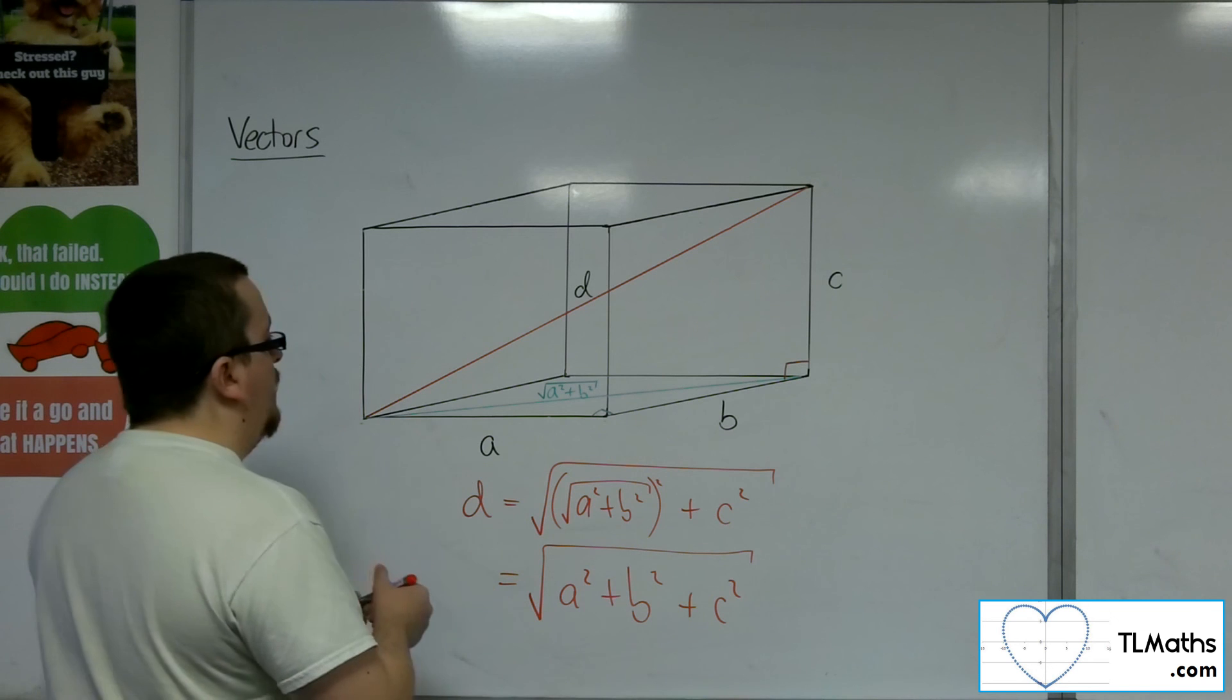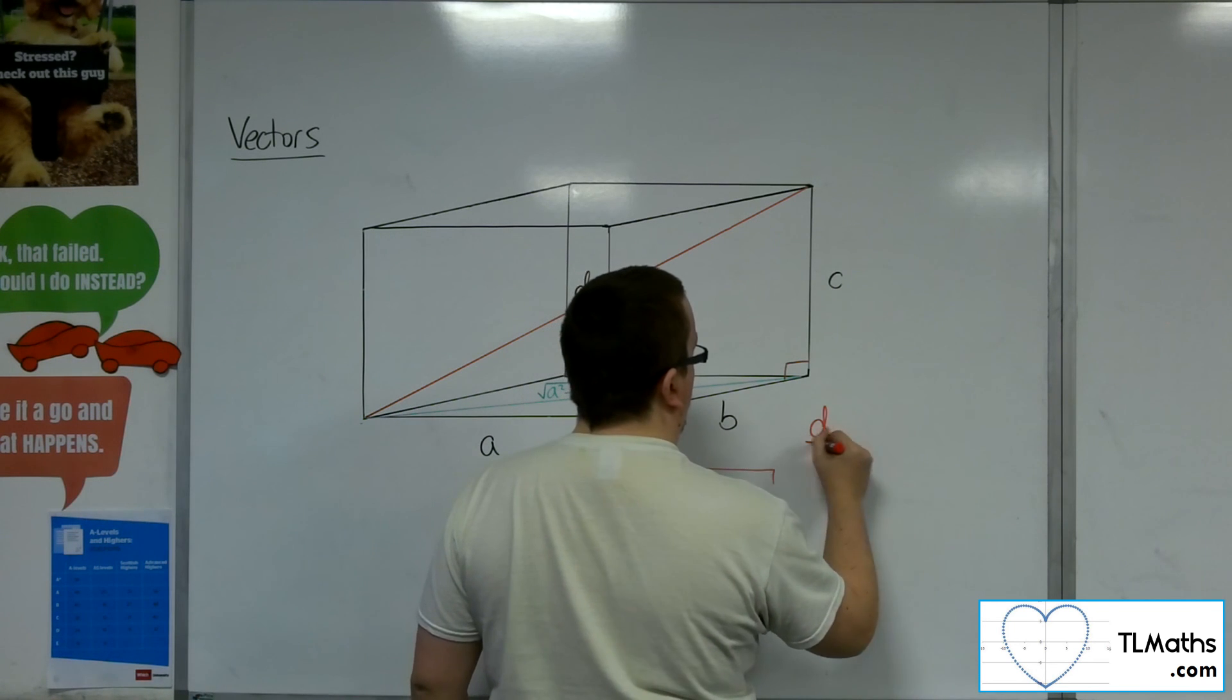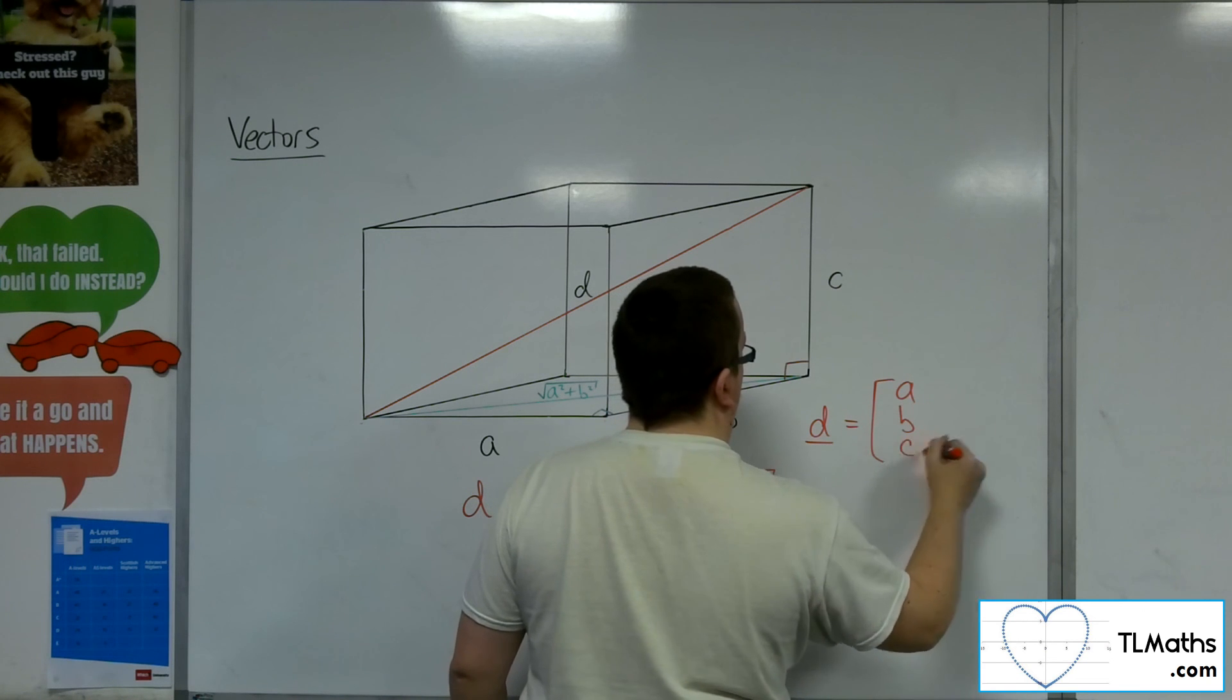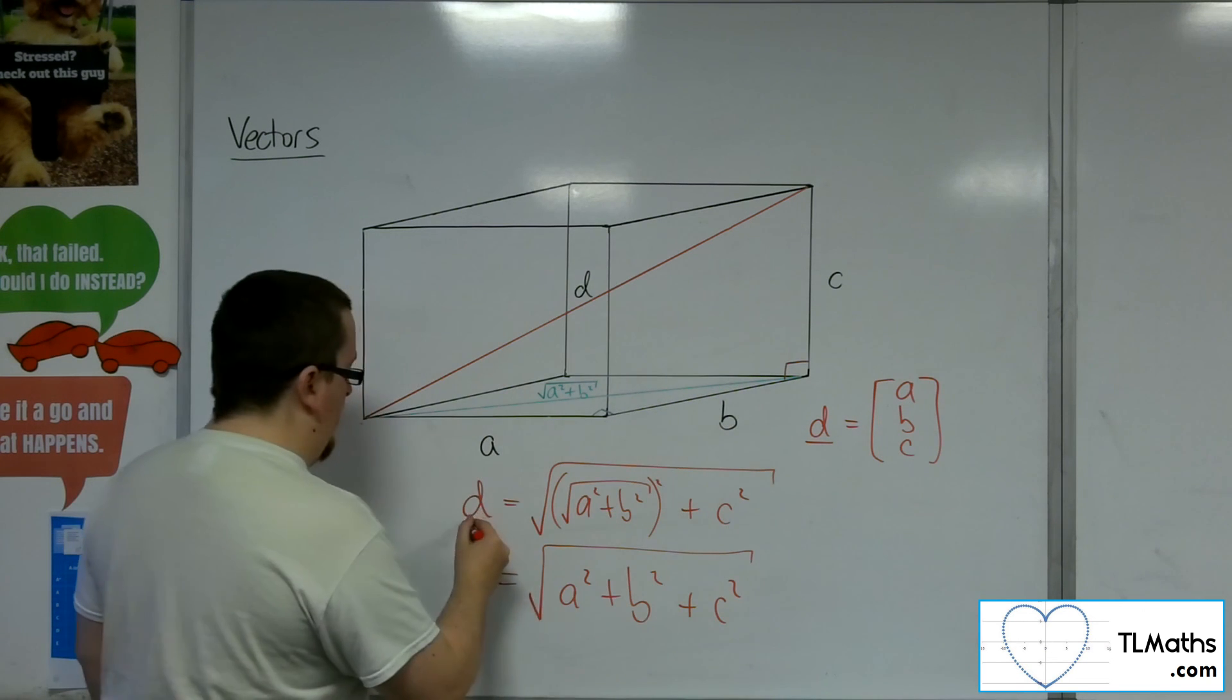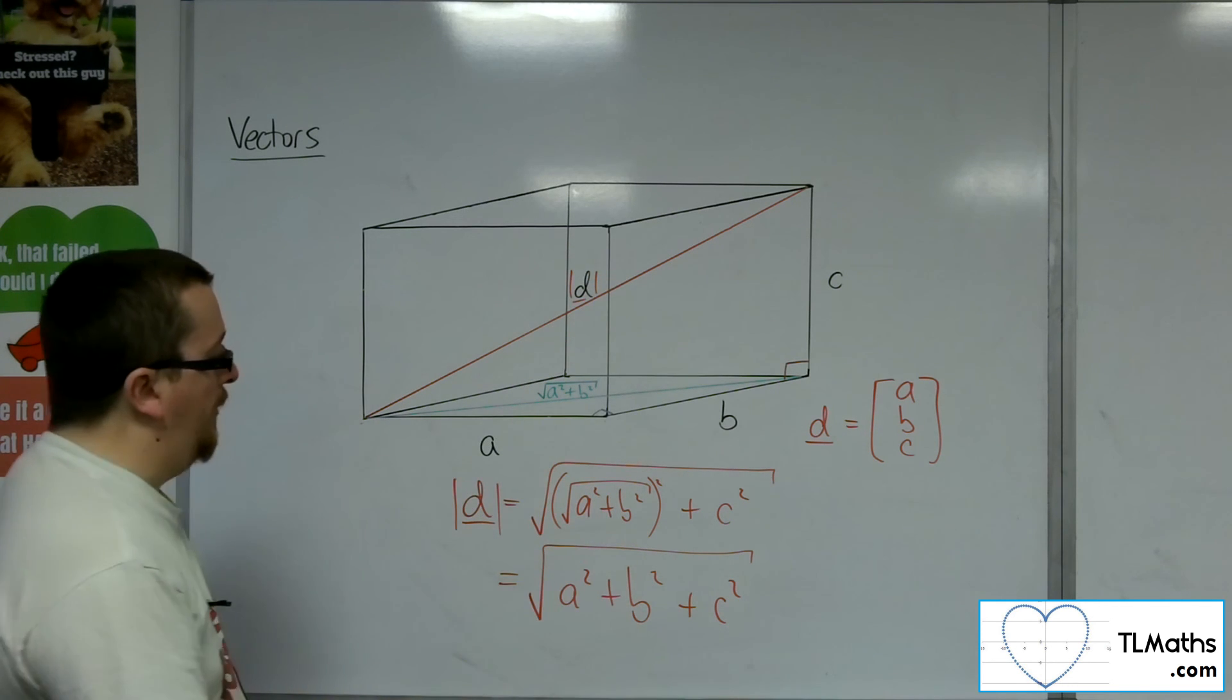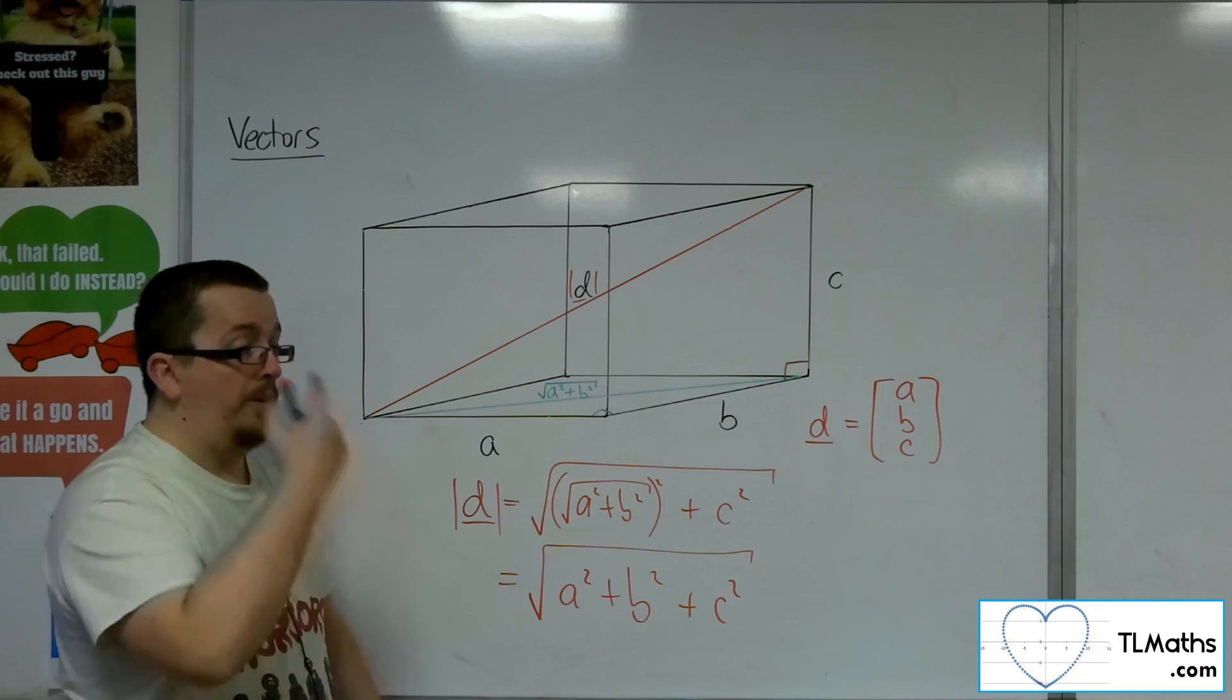So if D, say, was A, B, C, then the length of D is equal to the square root of A squared plus B squared plus C squared.